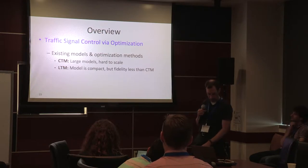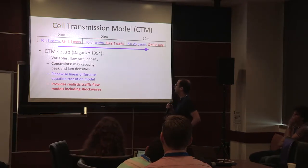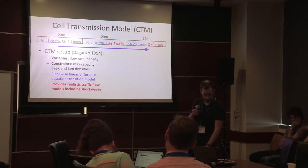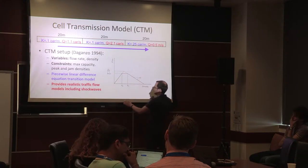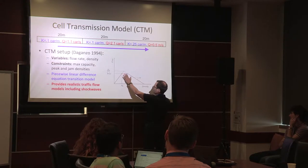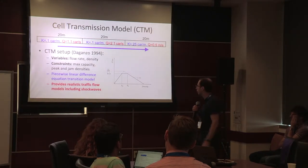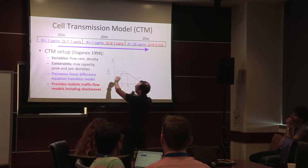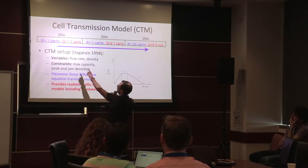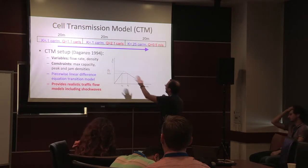The fundamental diagram of traffic flow relates density to flow: as density increases, flow increases, but at some point cars slow down and you reach jam density. The CTM models K (density) and Q (flow), with velocity being K divided by Q, for every cell. It's a model developed by Daganzo here at Berkeley's Civil Engineering department, famous for recreating shock waves — those density waves you hit on a highway where traffic suddenly slows down and propagates backwards over time.